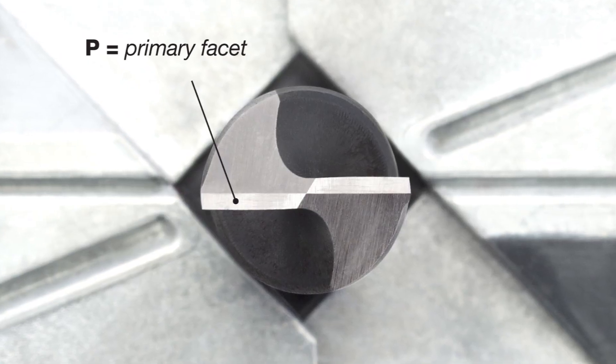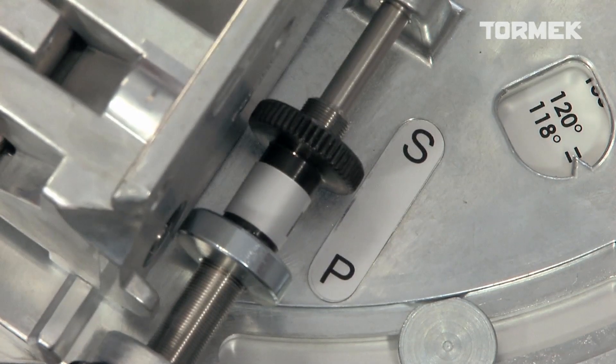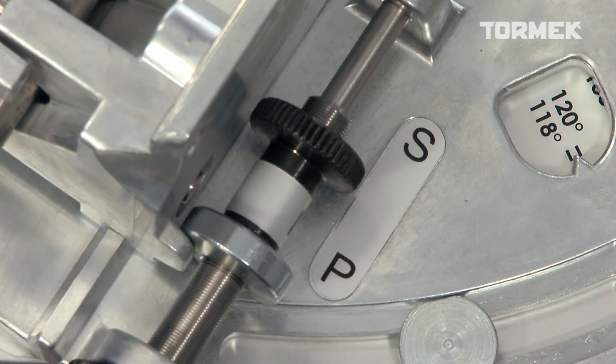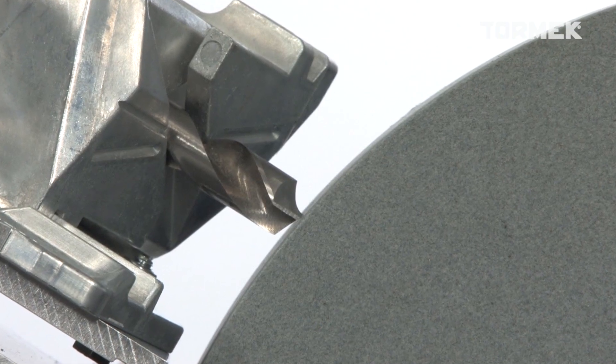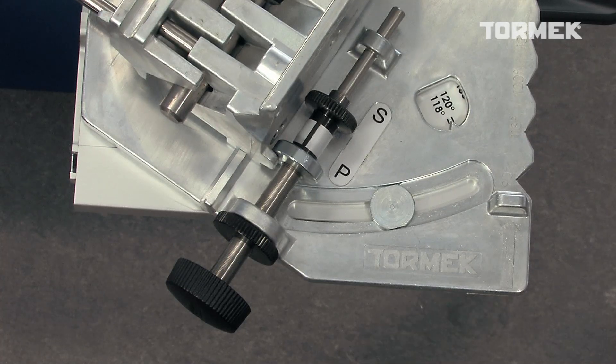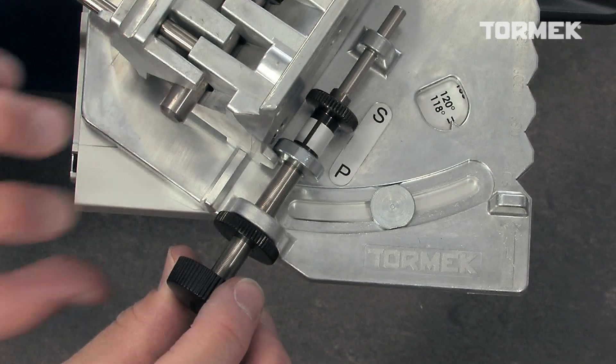Start by sharpening the primary facets. Position the drill holder so that the lug rests on the primary stop. Feed until the drill bit touches the stone. Then set the cutting depth. One turn with the setting screw equals half a millimeter in cutting depth.